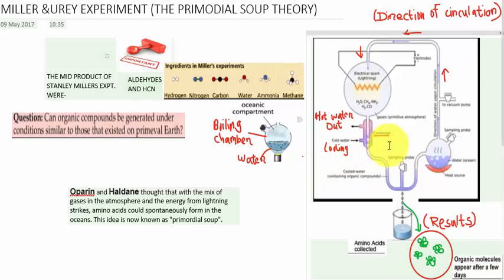You can see in this picture: this is the oceanic compartment where water is kept for boiling. This is the water level and boiling chamber with a heat source. The water vapor generated moves in this direction - the direction of circulation of water.